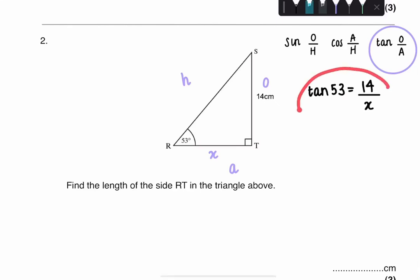Then you just rearrange this to make X subject to formula. So first, bring this up, and you get tan 53 multiplied by X equals 14. So then X is just equal to 14 divided by tan 53.